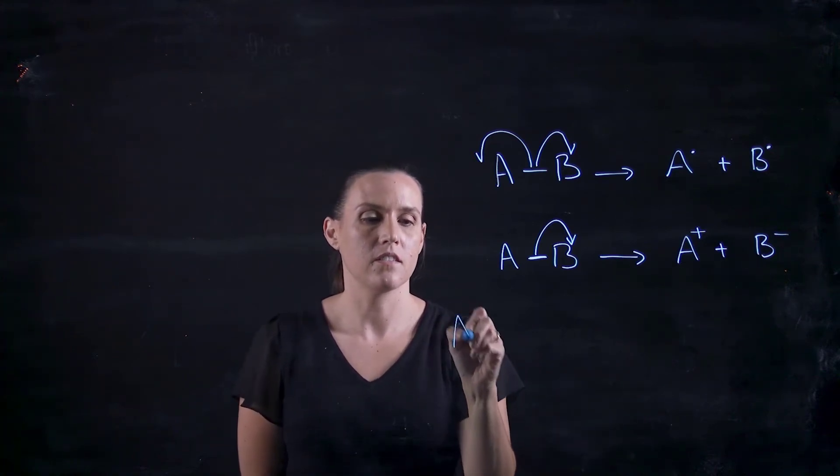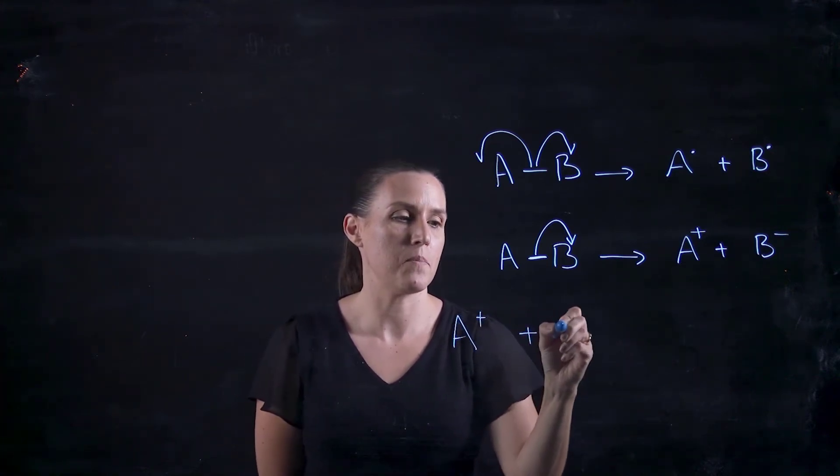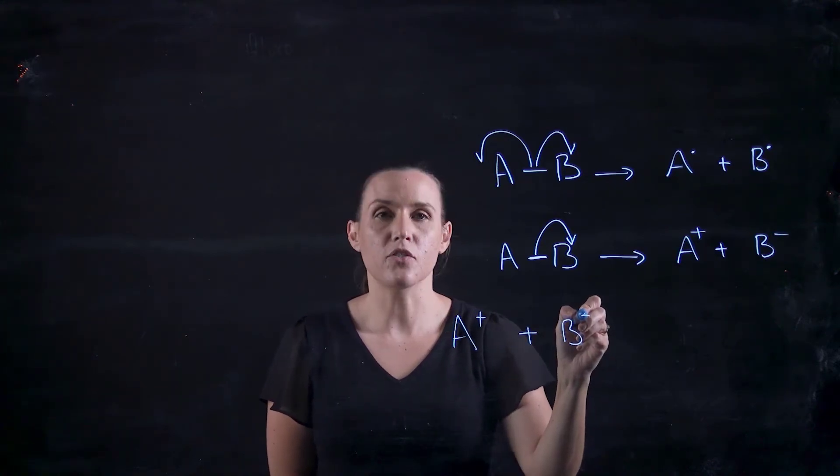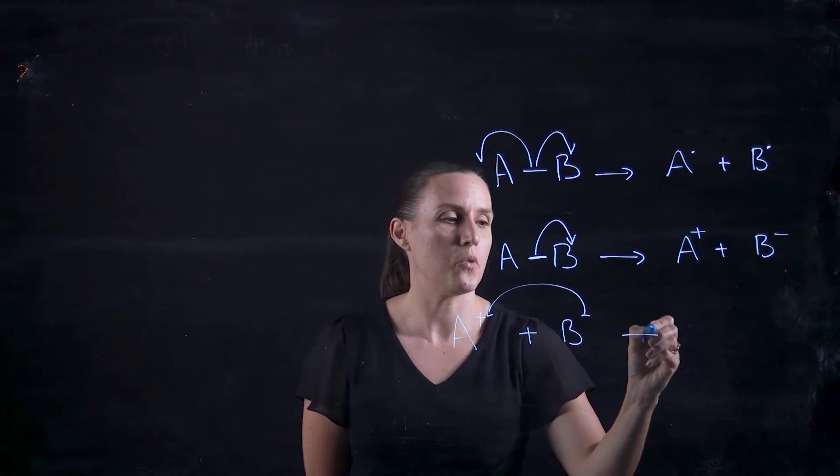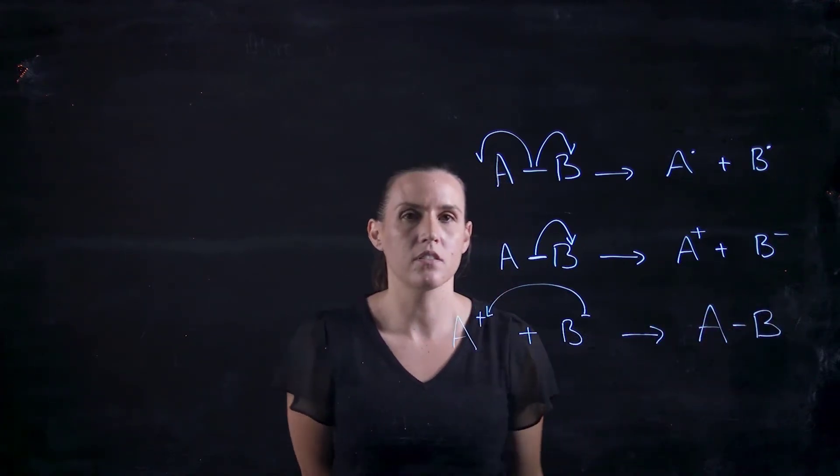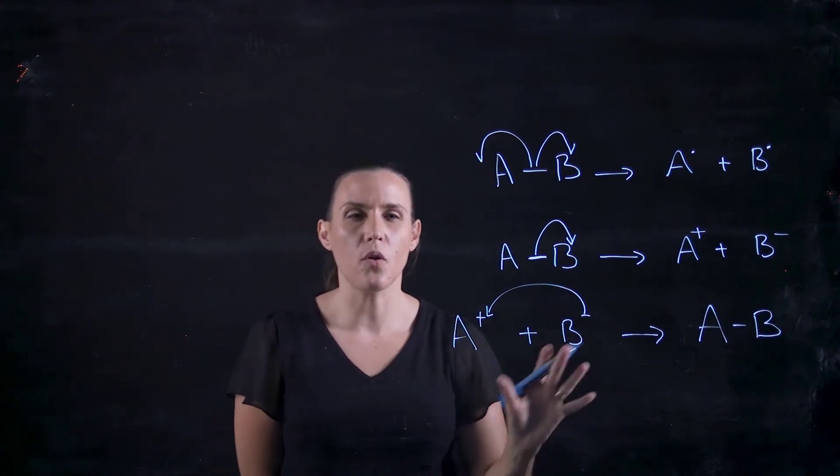Now, I can draw these going back again. A plus plus B minus. Those electrons will go on to the plus and we would then form that A-B bond. So we can kind of show quite a lot with these.